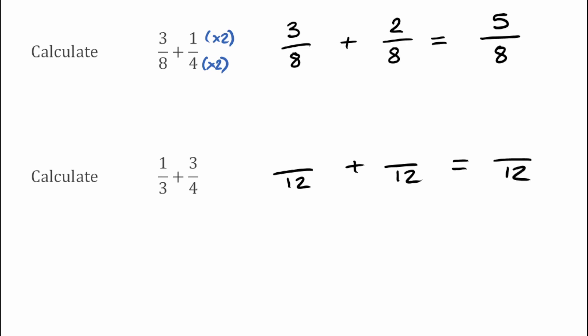Looking at the first fraction we had 3 on the bottom — we'd have had to multiply the bottom by 4 to make that 12, so to keep things equivalent we'd have had to do the same to the top. So we've multiplied that by 4, and 1 times 4 is 4, so that would be equal to 4 over 12.